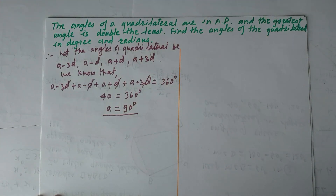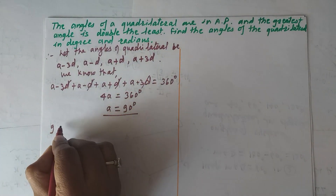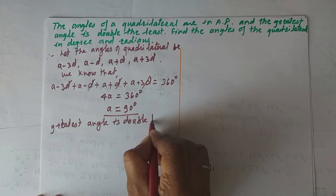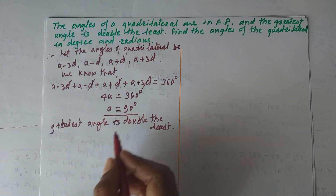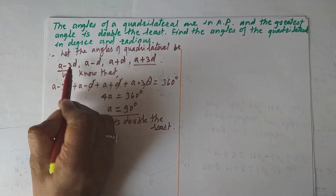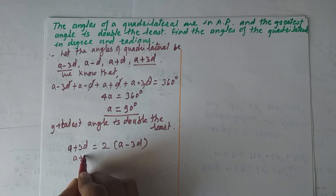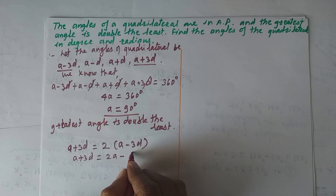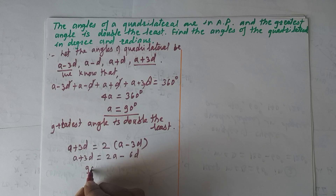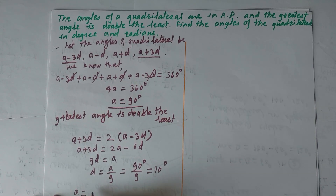The next condition: the greatest angle is double the least. The greatest angle is a+3d and the least is a−3d, so a+3d = 2(a−3d). Expanding: a+3d = 2a−6d, giving 9d = a, so d = a/9 = 90°/9 = 10°.